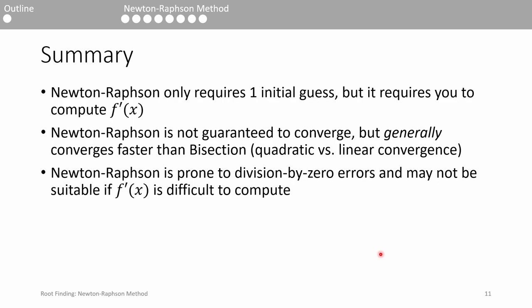To summarize, the Newton-Raphson method is riskier but offers greater rewards compared to the bisection method. You only need to supply one initial guess, but you also need to calculate the derivative in each step.